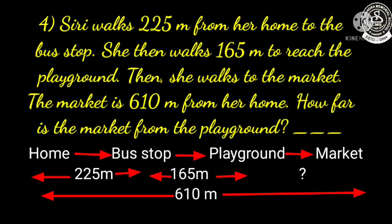So children, if we add the distance between home and bus stop — that is 225 meters — with the distance between bus stop and playground — that is 165 meters — we will get a total. Then we subtract that number from 610, which is the distance between home and market, and we will get the answer: the distance between playground and market.